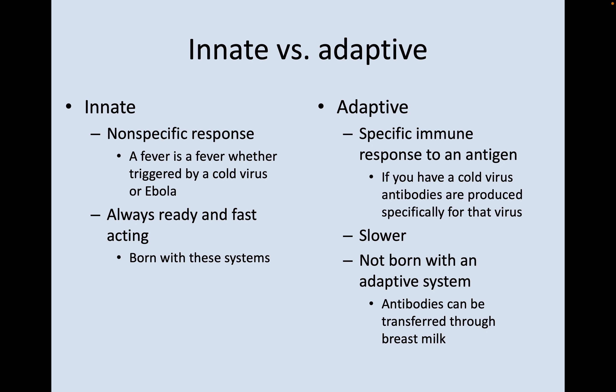We also have adaptive immune systems, and these are specific immune responses to an antigen or a pathogen. If you have a cold virus, antibodies are produced specifically for that virus. The adaptive immune response is slower and you're not born with an adaptive immune system. Antibodies can be transferred through breast milk, however.